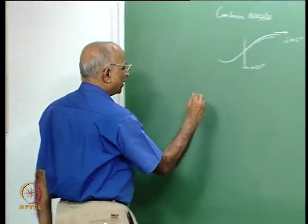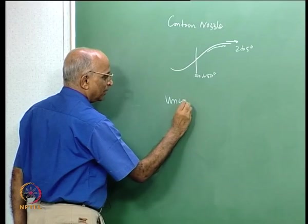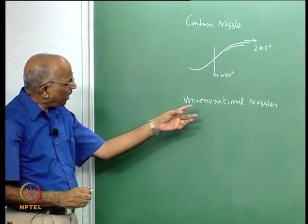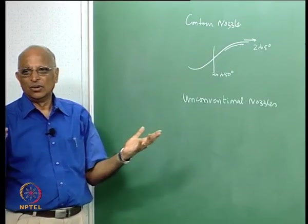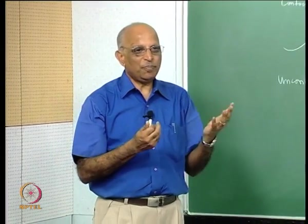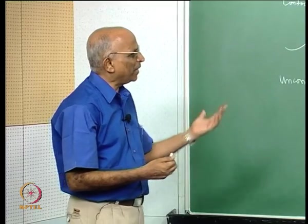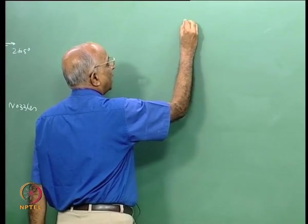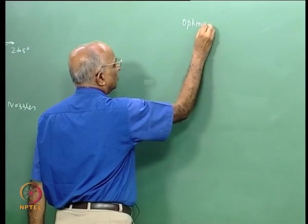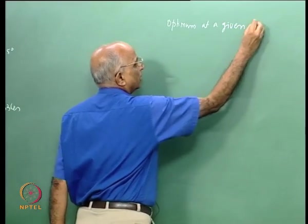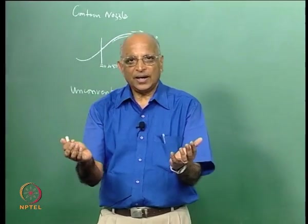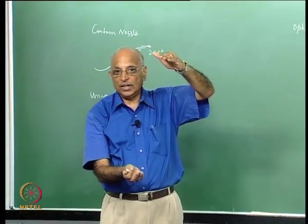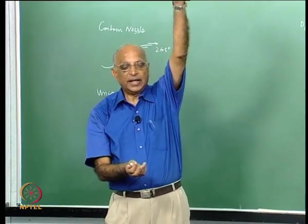In today's class let us look at some unconventional nozzles and ask whether there are better ways of having nozzles other than the conical nozzle or contour nozzle, and also make our mindset a little more clear about what future work must be done on nozzles. A nozzle operates at its optimum at a given value of ambient pressure. If I design a nozzle for 15 kilometers but operate it from 0 kilometers up to 30 kilometers, then from 0 to 15 it is not optimum, at 15 it is optimum, and beyond 15 it is under-expanded and not optimum.